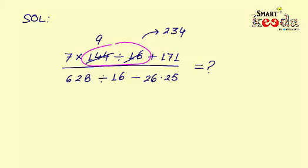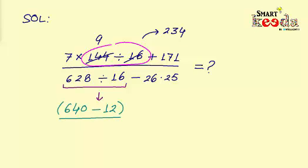Now after simplifying the numerator part, we can see that we first need to solve the division part which is 628 ÷ 16. Now if we divide 628 by 16 the traditional way, it will become a bit cumbersome. And to make it easier, we can write the equation as (640 - 12) ÷ 16.